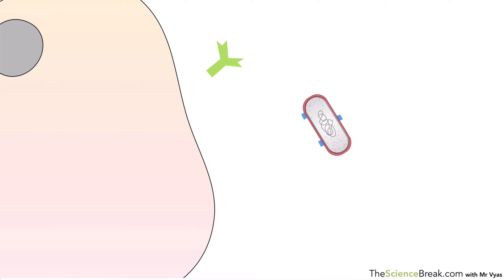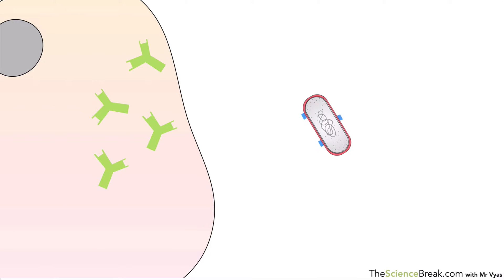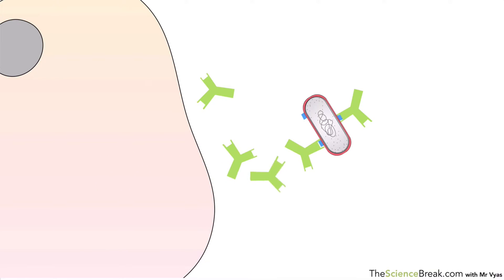If a different microbe comes in, the antibody's shape no longer fits that particular antigen, so it can't affect that microbe. White blood cells have to produce the right antibody for each particular pathogen — this is why sometimes it takes a while to fight off a disease. Once the correct antibodies have been made, they are released and attach to the antigens to help destroy the pathogen.